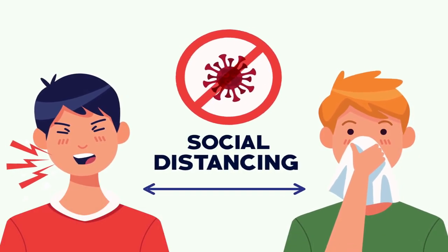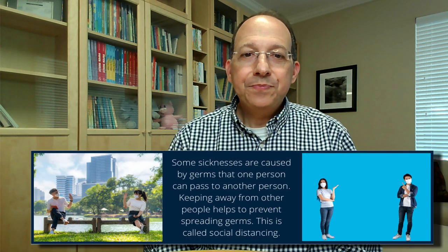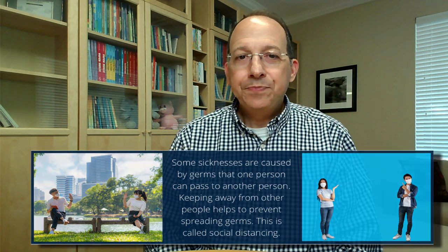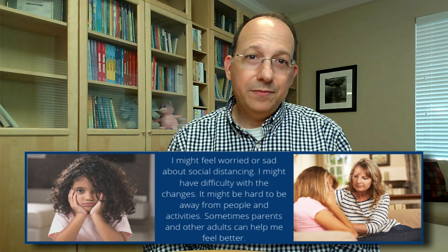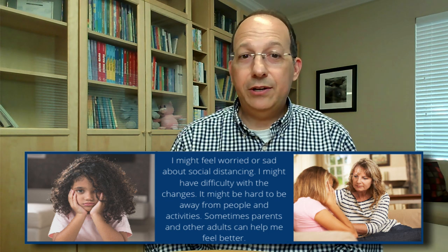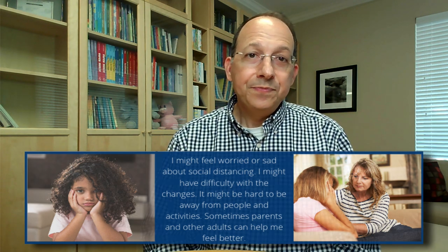There are many ways to use a social narrative. We recommend reading it with your child or adolescent and asking questions about key concepts to be sure they understand — for example, 'What does it mean to spread germs?' or 'Why can't we be around large groups of people?' You can also ask how they feel about virtual learning or current changes. Be sure to refer to concepts from the narrative in daily life and reread the story as necessary.